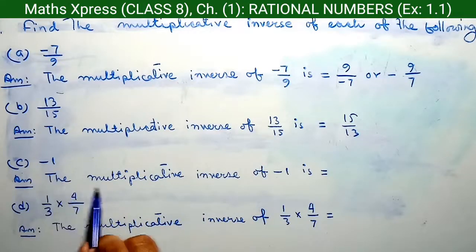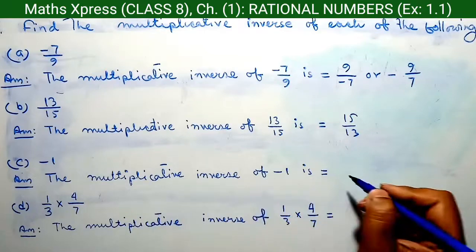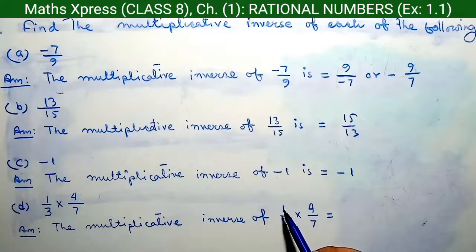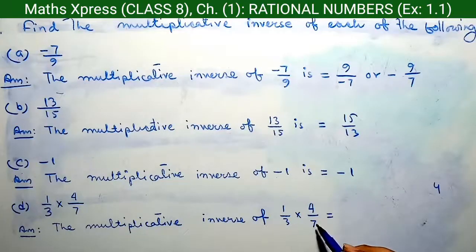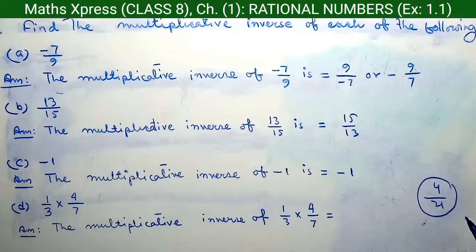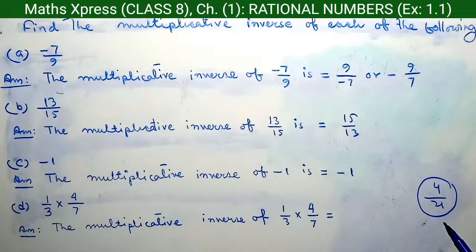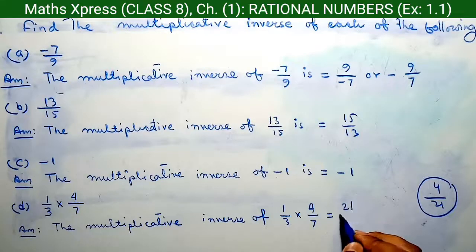Question C: minus 1. The multiplicative inverse of minus 1 is minus 1. Question D: Multiplicative inverse of 1 by 3 into 4 by 7. Here, we multiply 1 and 4 to get 4, and 3 and 7 to get 21. This gives the fraction 4 by 21. Now we write its multiplicative inverse, so the multiplicative inverse of 4 by 21 is equal to 21 by 4.